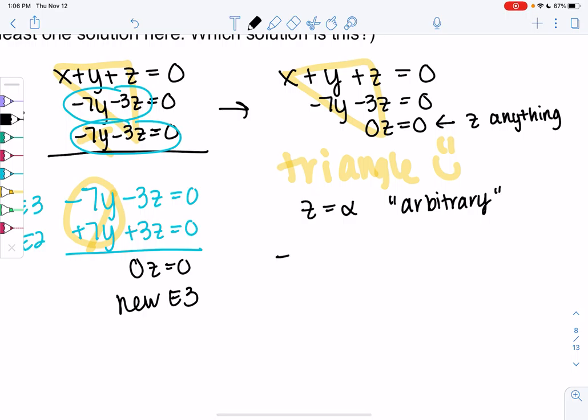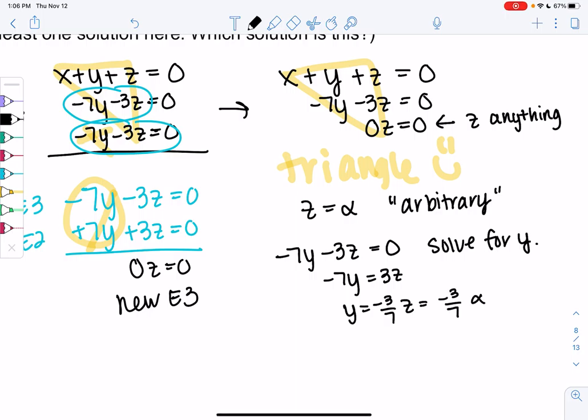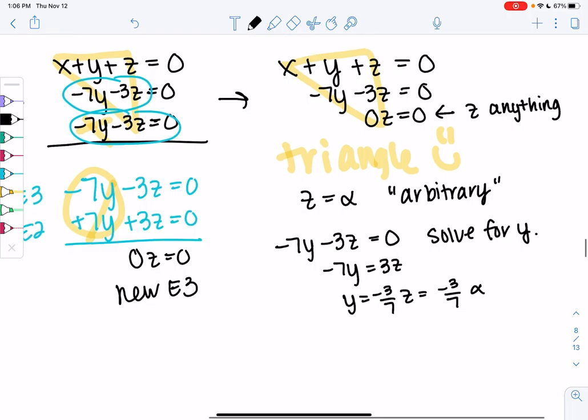Negative 7y minus 3z equals zero, so we'll solve for y. Minus 7y equals 3z, so y is negative 3 over 7z, or negative 3/7 times alpha. Whatever z is, we multiply it by negative 3/7 to find y.